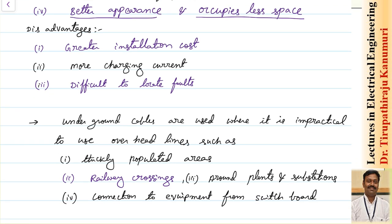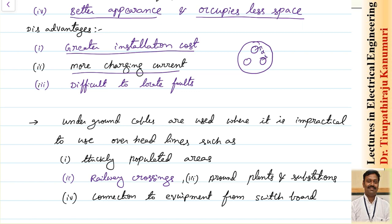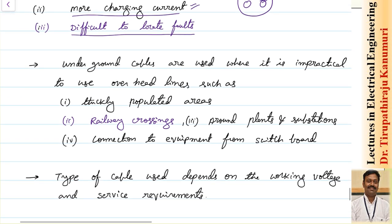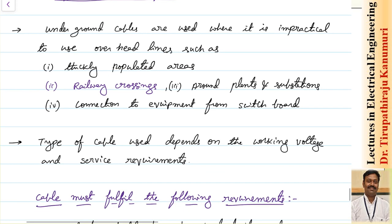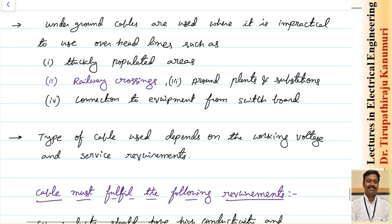The disadvantages of underground cables include greater installation cost. In cables, adjacent conductors are placed very close together, so capacitance is higher, leading to more charging current compared to overhead lines. It is also difficult to locate and diagnose faults in a cable. Joints or connections can only be made at junction boxes via manholes — it is impractical elsewhere. These limitations mean underground cables have high initial cost, difficult fault location, and more capacitive charging current.